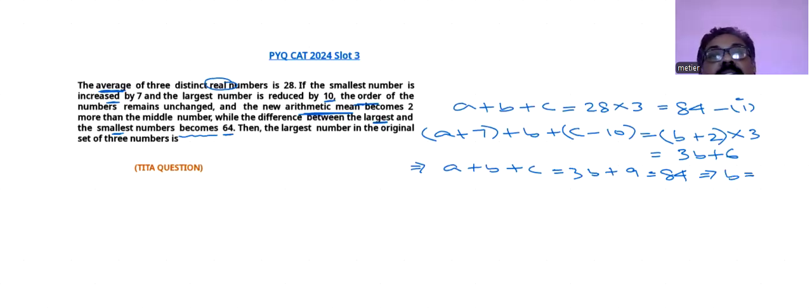So what we are getting here is that 84 minus 9 is 75, divided by 3, b will be coming as 25. This will be your equation number 2.